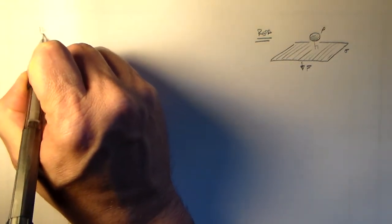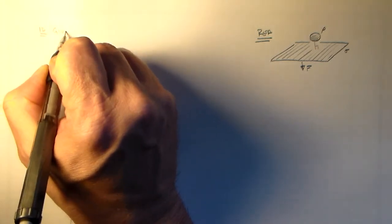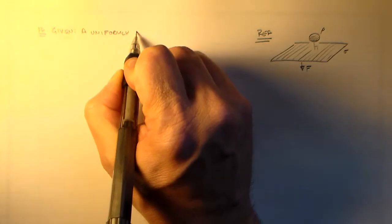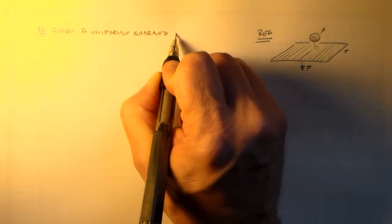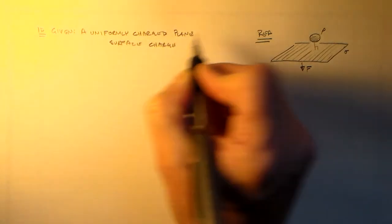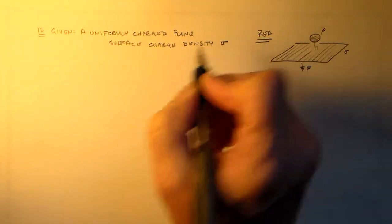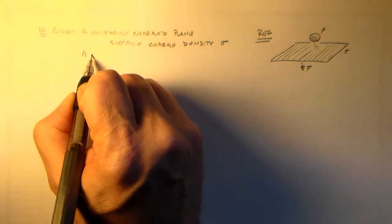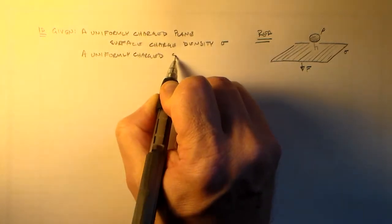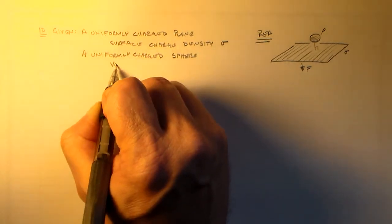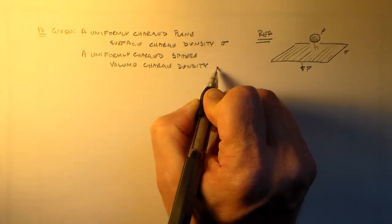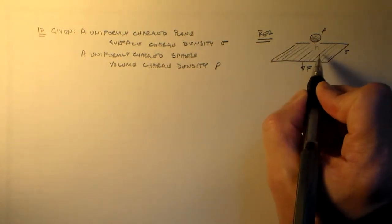So let's see how I can do that. So what do I have? Well, I have one, I have a uniformly charged plane. So that has a surface charge density sigma, and then we have a uniformly charged sphere. It has a volume charge density.